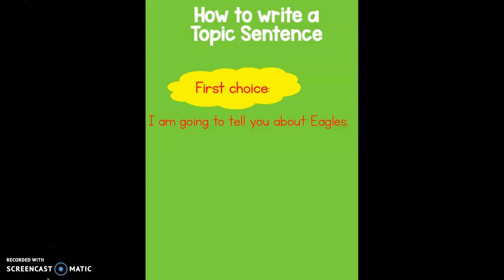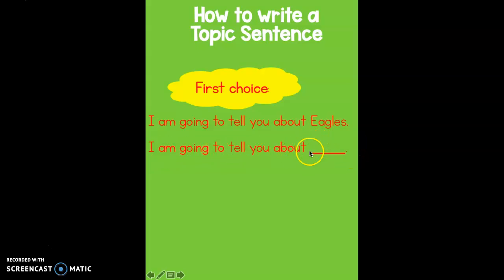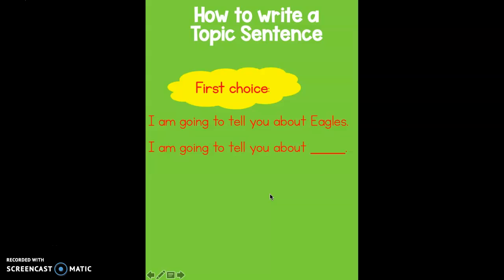The first choice is: 'I am going to tell you about Eagles.' Obviously you wouldn't write that on your paper because you didn't research Eagles. If you like starting your paper like this, then you would write: 'I am going to tell you about' and then write your Florida friend in the space. You wouldn't write Eagles and you wouldn't make a line. That's your first choice — not a bad way to start writing, especially when we're doing it for the first time.